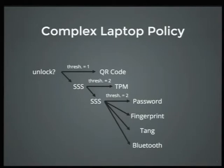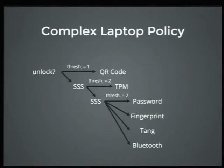Going down our next branch, our threshold here is two again — we need two methods of authentication. We have four options: type in your password, scan your fingerprint, contact a Tang server, or do Bluetooth proximity. If you're sitting at your desk in your office underneath the Bluetooth beacon and on the corporate network, when you boot your system you'll get in automatically because those two return values.